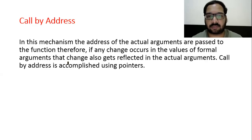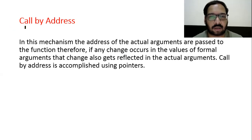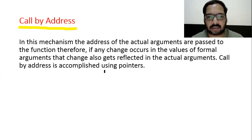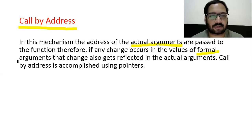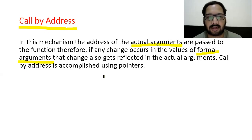Call by address: when we pass a variable from one function to another and we want any change in the second function to be reflected in the first, we pass the addresses of the variables instead of their values — that calling is called call by address. In this mechanism, the address of the actual arguments is passed to the function. Therefore, if any change occurs in the values of formal arguments, that change also gets reflected in the actual arguments. Call by address is accomplished using pointers.